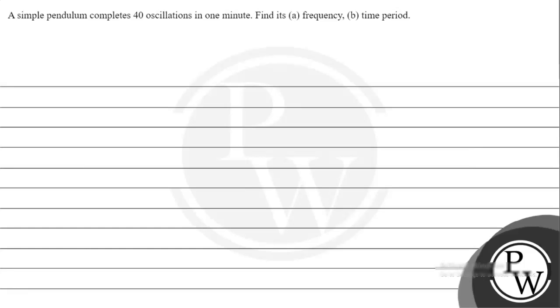Let's read the given question. The question says a simple pendulum completes 40 oscillations in one minute. We need to find: first, frequency; second, time period. So two things we need to find here.